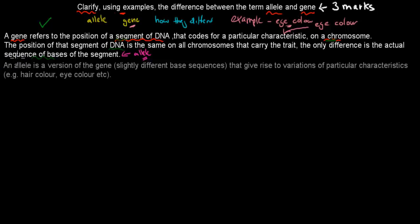So an allele is a version of the gene. So if we say, for example, eye color is what the gene codes for, and that version of the gene is blue color, brown color, or green eyes. And these were the versions. The gene itself codes for eye color, and the versions code for different types of eye color. So an allele is a version of a gene, slightly different base sequences, that give rise to variations of particular characteristics, for example, hair color and eye color.